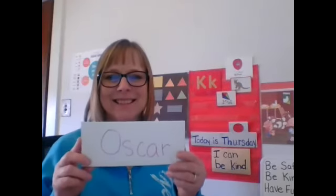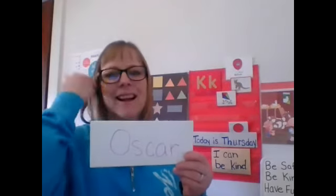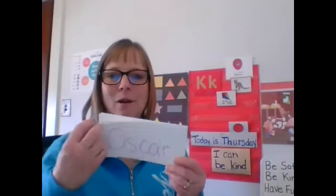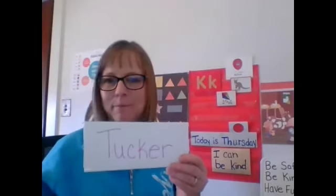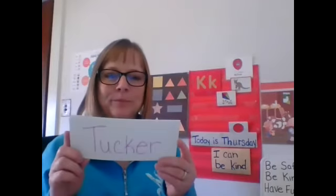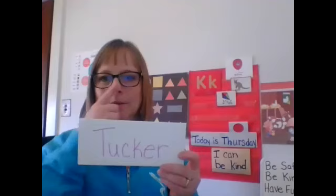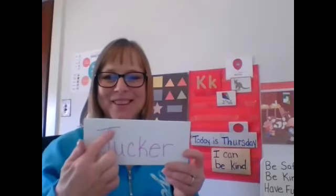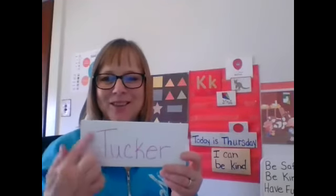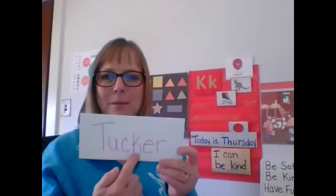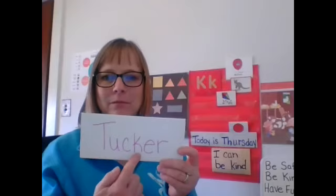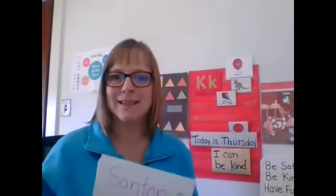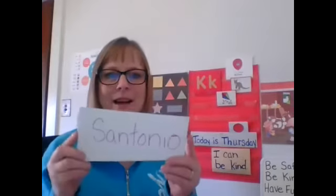Whose name is that? Oscar. Oscar starts with the letter O — no K's in his name. Tucker. Tucker starts with the letter T, but what's in the middle of his name? A K — the lowercase K, because it's in the middle of his name.